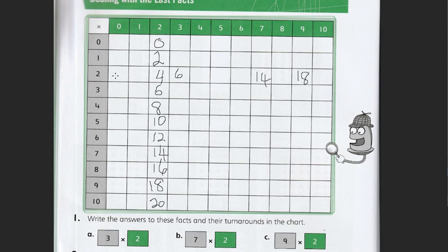Then come up and do the turnarounds. 2 times 0 is 0. 2 1s are 2. 2 2s are 4. Then 6 is there. So 4 times 2 is 8. 2 times 5 is 10. 2 times 6 is 12. 2 times 7 is there. 2 times 8 is 16. So there's the 2 facts.